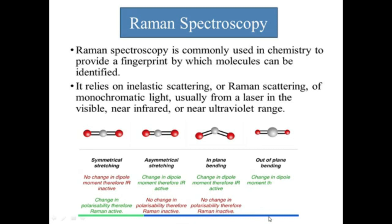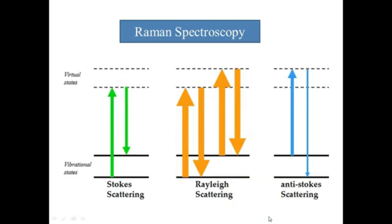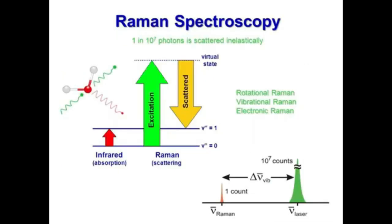In Raman spectroscopy, there are vibrational states and virtual states. We collect Stokes scattering, Rayleigh scattering, and anti-Stokes scattering. Only about 1 in 10 to the power of minus 7 photons undergoes Raman scattering analytically. The excitation involves virtual states from V=0 to V=1. There are three types: rotational, vibrational, and electronic Raman spectroscopy. The Raman signal ratio is about 1 count per laser to 1000–7000 counts.